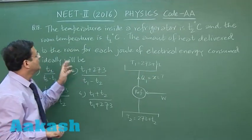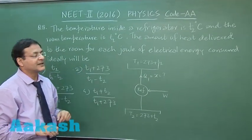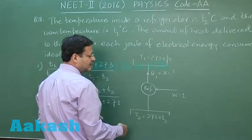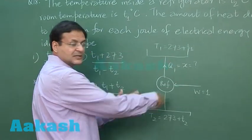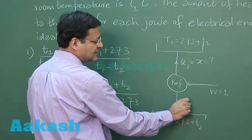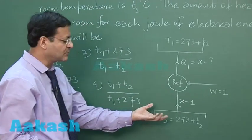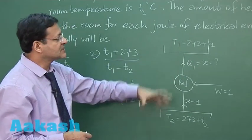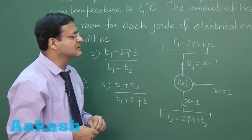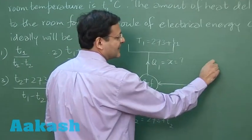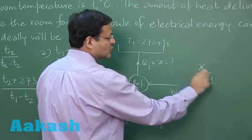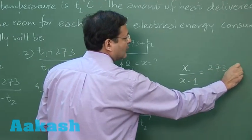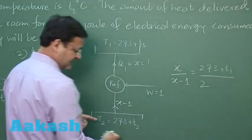This is for each joule of electrical energy consumed. So this W and this Q2, if both of them are added together that makes it X. So the value of this thing will be X minus 1. That means the heat extracted from the cold part is X minus 1 and delivered to the surroundings is X. Now since the process we are assuming to be reversible, you can also say that X upon X minus 1, this is the ratio of heat, that is also the ratio of temperature. So this is 273 plus T1 upon 273 plus T2.